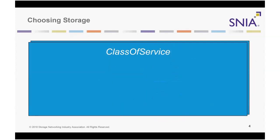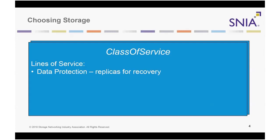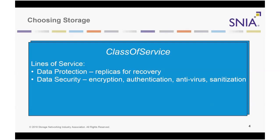A class of service describes a service to be provided by a storage resource. Each class of service can comprise multiple lines of service, each describing service-level objective aspects. Currently, Swordfish defines the following lines of service. The data protection line of service describes the creation and maintenance of data replicas for the purpose of recovery from data loss. The data security line of service describes security measures such as encryption, user-host authentication, antivirus, and sanitization methods.